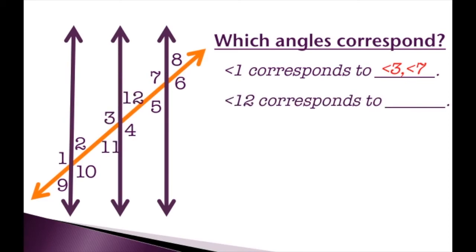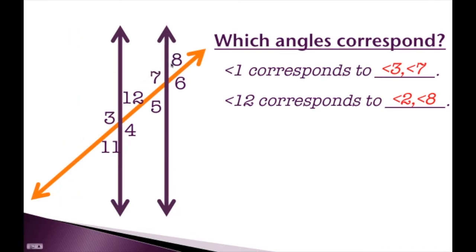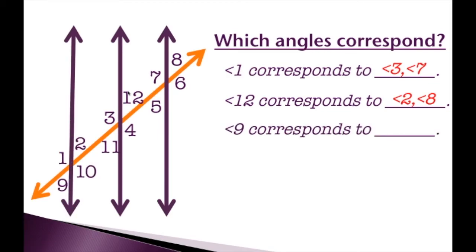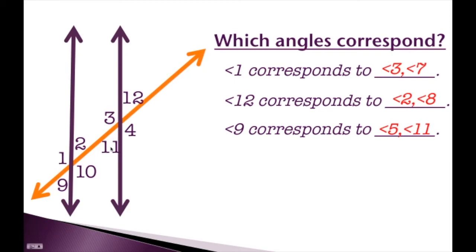Angle 12 corresponds to angles 2 and 8. Angle 12 is the top right angle in its group, angle 2 is the top right in its group, and angle 8 is also a top right angle — so angles 2 and 12, and angle 8 and 12, correspond. Angle 9 corresponds to angles 5 and 11. Angle 9 is the bottom left angle, angle 5 is the bottom left of its group, and angle 11 is also a bottom left angle — so they all correspond.